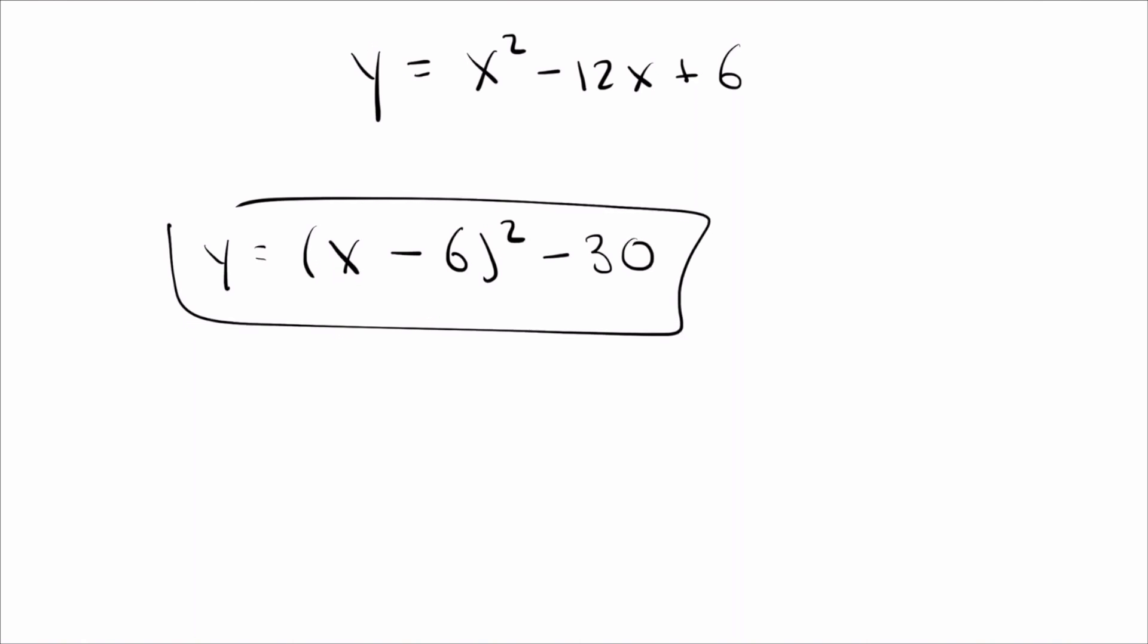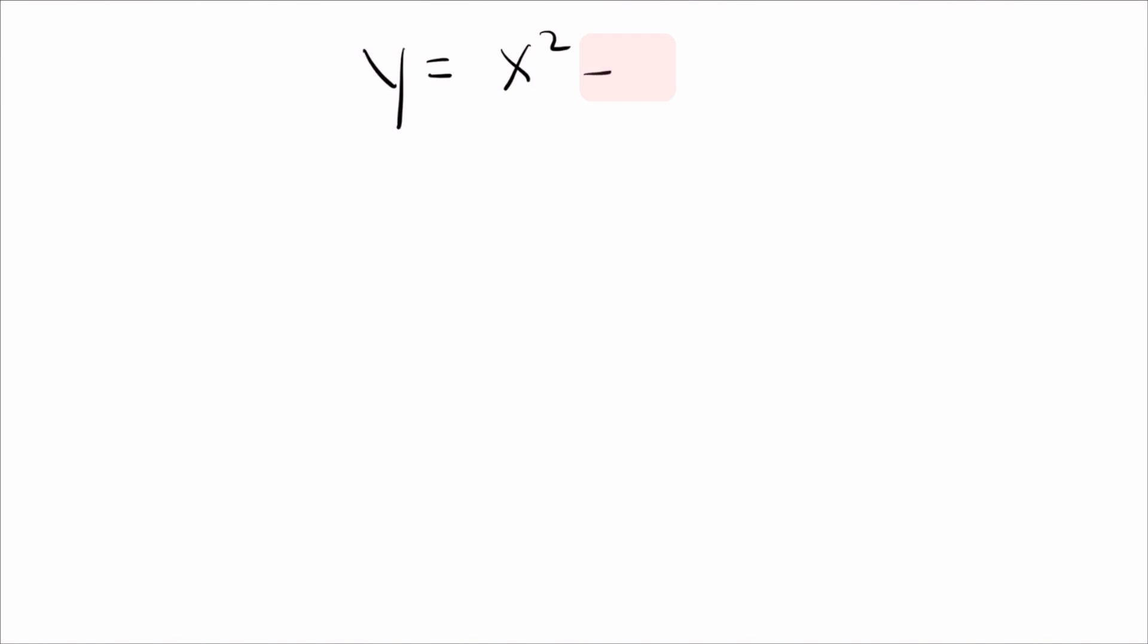So hopefully you see that this is really a faster way to complete the square and can really save you time on homework and on tests. Having said that, there are times when this doesn't work so well. And really, the only time that you're going to get into trouble is when you've got an odd number next to the x. And it would still work, it's just much slower and probably much harder to do in your head.